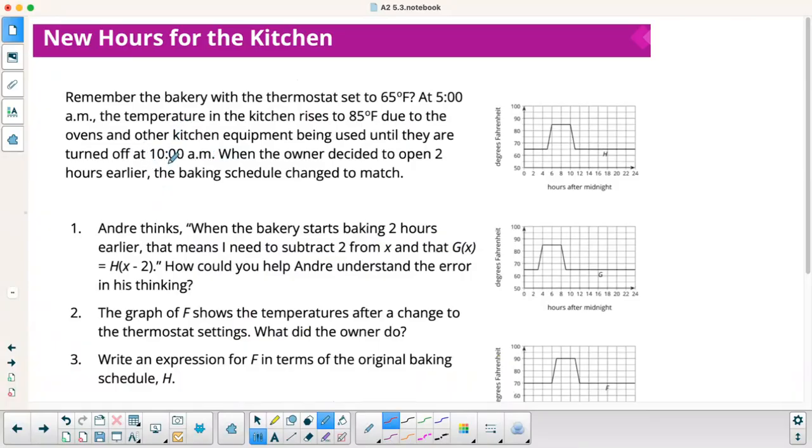All right, so remember the bakery where the thermostat was set to 65 at 5 a.m.? The temperature in the kitchen rises to 85. So here's my 65. They turn on the ovens, and it rises up here to 85. And they keep the ovens on, and then they turn them off, and it cools down and gets back to 65. It's obviously going to be hotter in the kitchen when the ovens are on because they're generating heat.